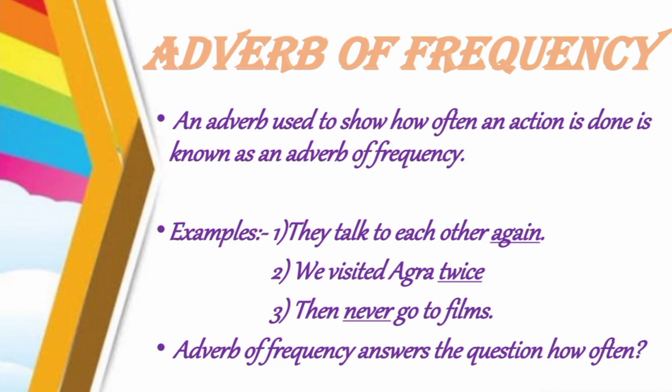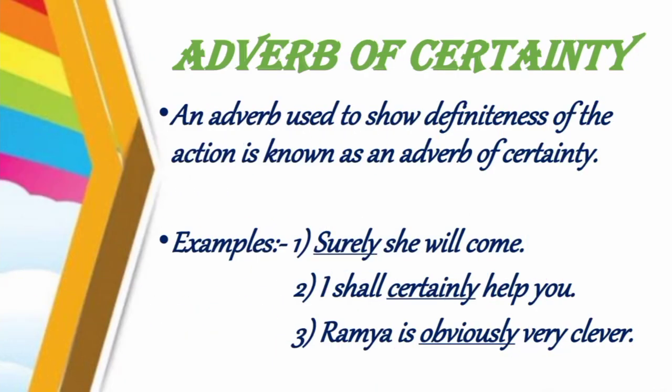The fourth adverb is adverb of frequency. An adverb used to show how often an action is done is known as an adverb of frequency. Examples: 'They talk to each other again'; 'We visited Agra twice'; 'They never go to films'. The words again, twice, and never are examples of adverb of frequency, showing how many times or how often the action is done. Adverb of frequency answers 'how often'.